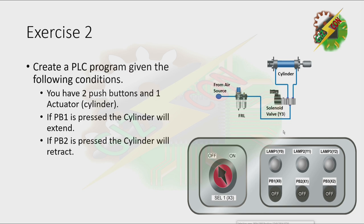Create a PLC program given the following conditions. You have two push buttons and one actuator. If PB1 is pressed, the cylinder will extend. If PB2 is pressed, the cylinder will retract.